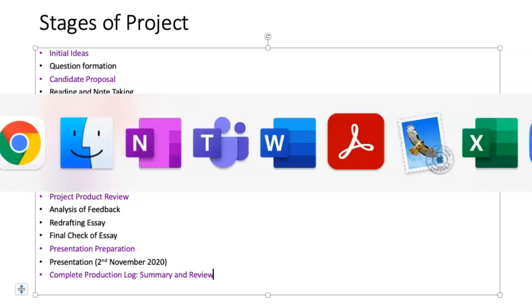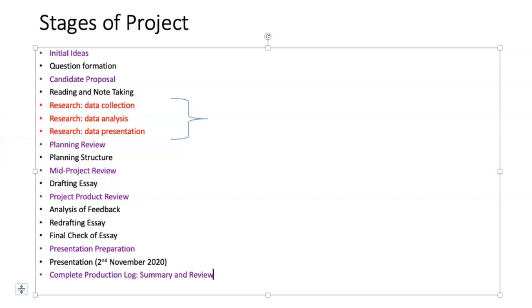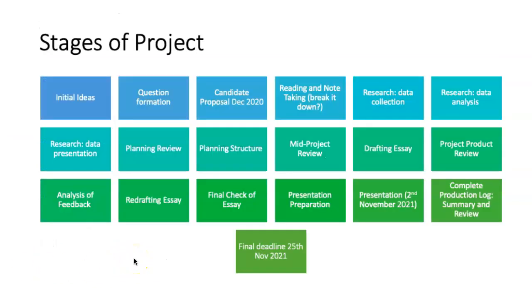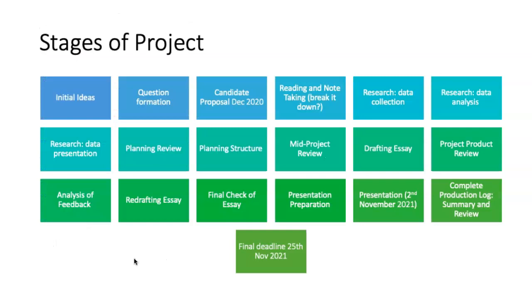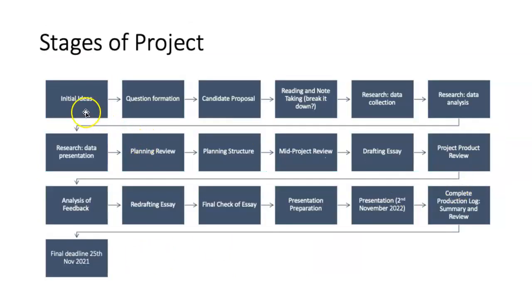There are a lot of things to do, as you can see. This is a different way of seeing all of those stages — I put it in a different format to show that different people like information presented in different ways. I probably prefer it in the linear form, but here's an alternative. And here's a further alternative — a flow chart where you can see one thing following another. The final deadline is the 25th of November of this year, and you need to think of that as your absolute final deadline.